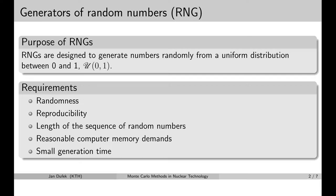That uniform distribution is denoted by U. Then we take these random numbers and transform them into the probability density distribution given for specific random variables.